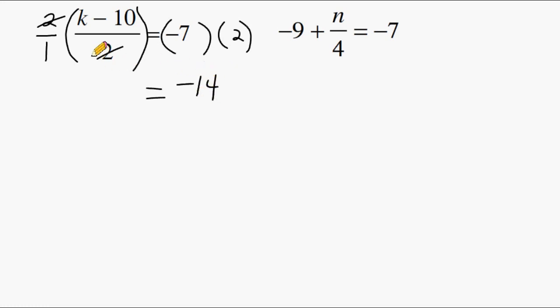Now because we canceled out this two, that leaves us with k minus ten on the left-hand side of our equation. Then we just do the inverse of minus ten, which is to add ten. And what we do on the left, of course, you've heard that a million times, we have to do on the right-hand side. Okay, so on the right-hand side now we have negative fourteen and positive ten, which results in negative four.